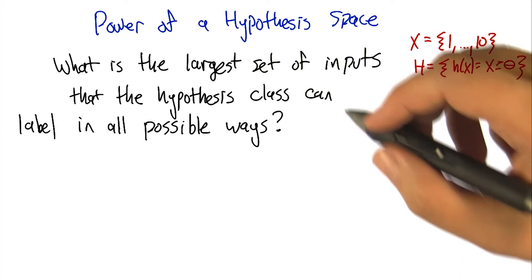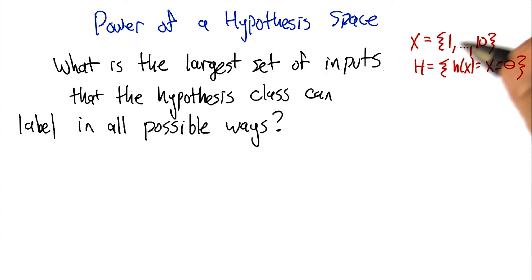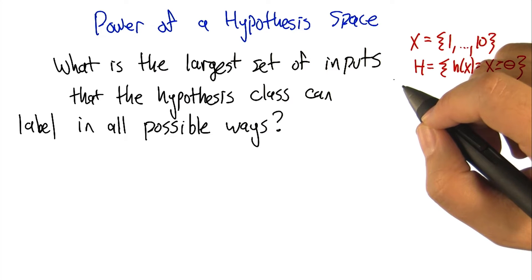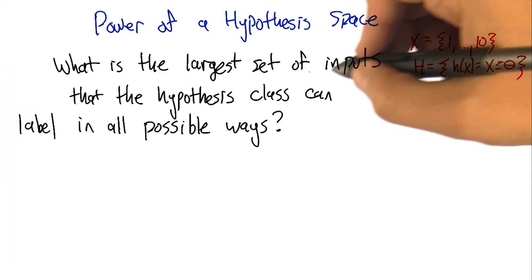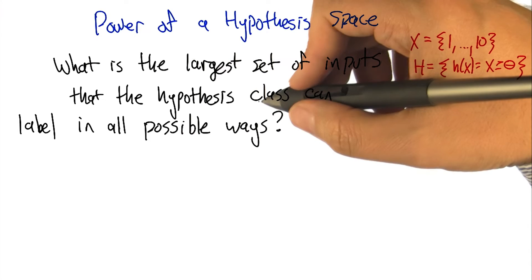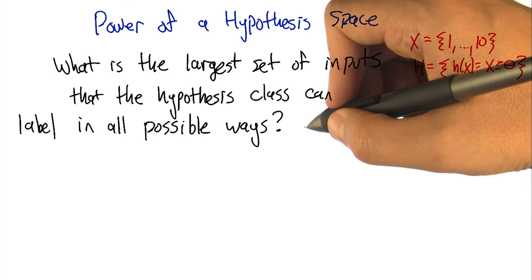This is how we measure the power of a hypothesis space. It's a clever definition. For a given input and hypothesis space, we ask: what is the largest set of inputs that the hypothesis class can label in all possible ways?